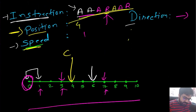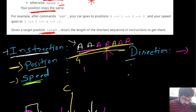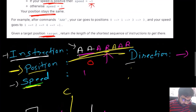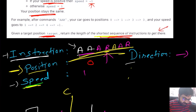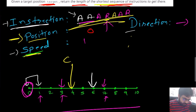The question asks: given a target value, starting at position zero with speed one, what is the shortest sequence of instructions to reach the target? We need to return the length of those instructions.